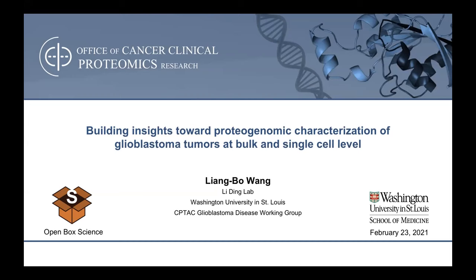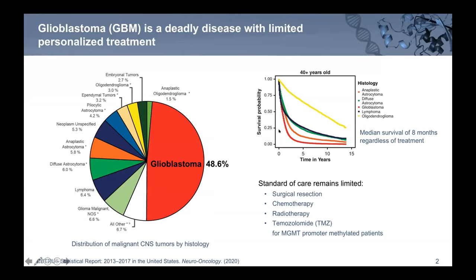Glioblastoma, also known as GBM, is the most common form of malignant brain tumors and is very deadly, with median survival of less than a year. Despite its aggressiveness, the standard of care for GBM is pretty limited. There's typical surgical resection and removal, and then chemo or radiotherapies. Some patients qualify for the TMZ drug due to MGMT promoter methylation status. But that's it — we don't really have many personalized treatments for GBM to this day.